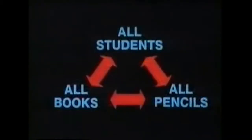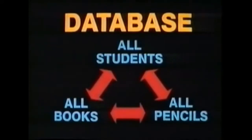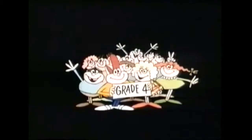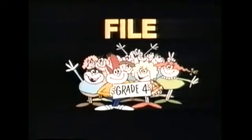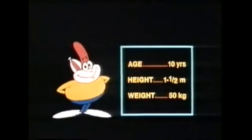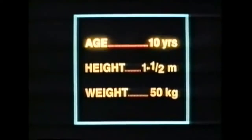For example, if you had information about all the students in a school, and all the books, and all the pencils, and if all this information were interrelated in a systematic way, then you could call this a database. The information about one particular class of students could be called a file, the information about one particular student could be called a record, and each individual item of information about that student could be called a field.